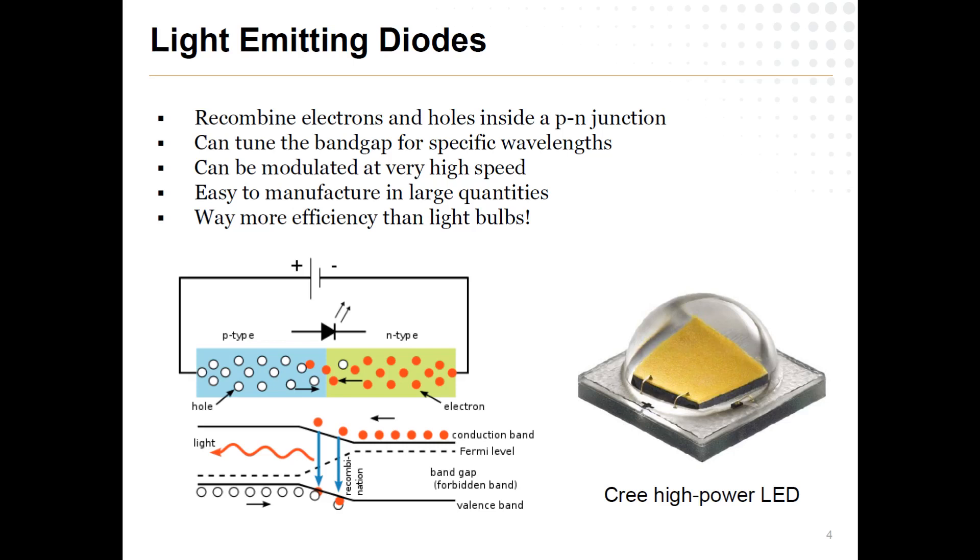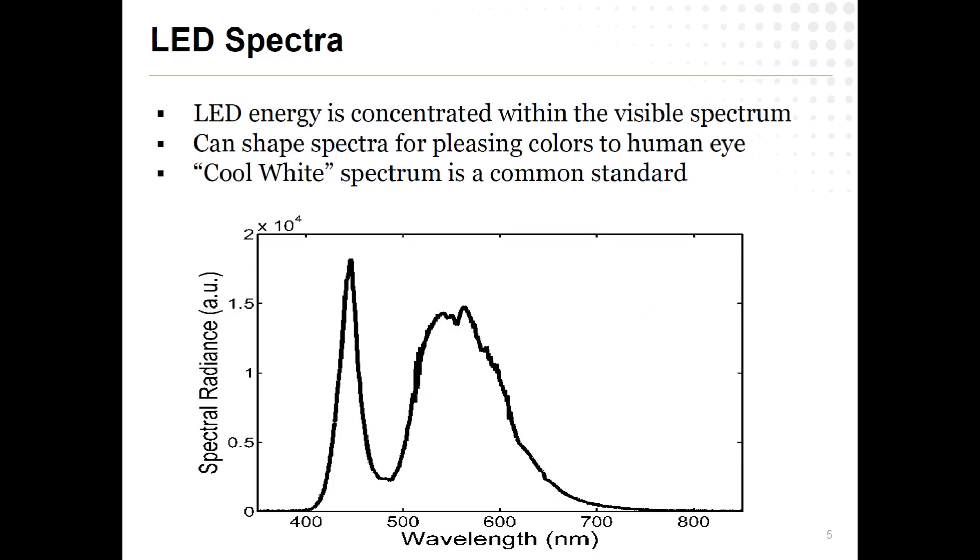You can manufacture them in very large quantities. So, for example, this little chip is probably a square millimeter in size. And you imagine a wafer that's about yay big. You can easily cram out, you know, a hundred thousand of these little chips on a wafer. So they're pretty easy to manufacture. And, of course, efficiency, efficiency. Efficiency is very, very helpful.